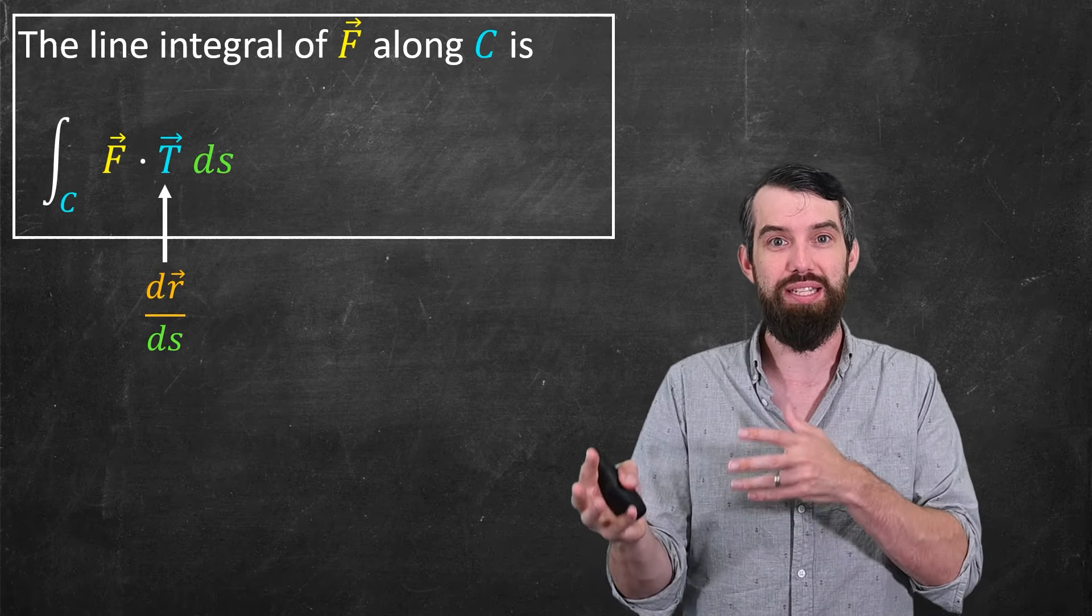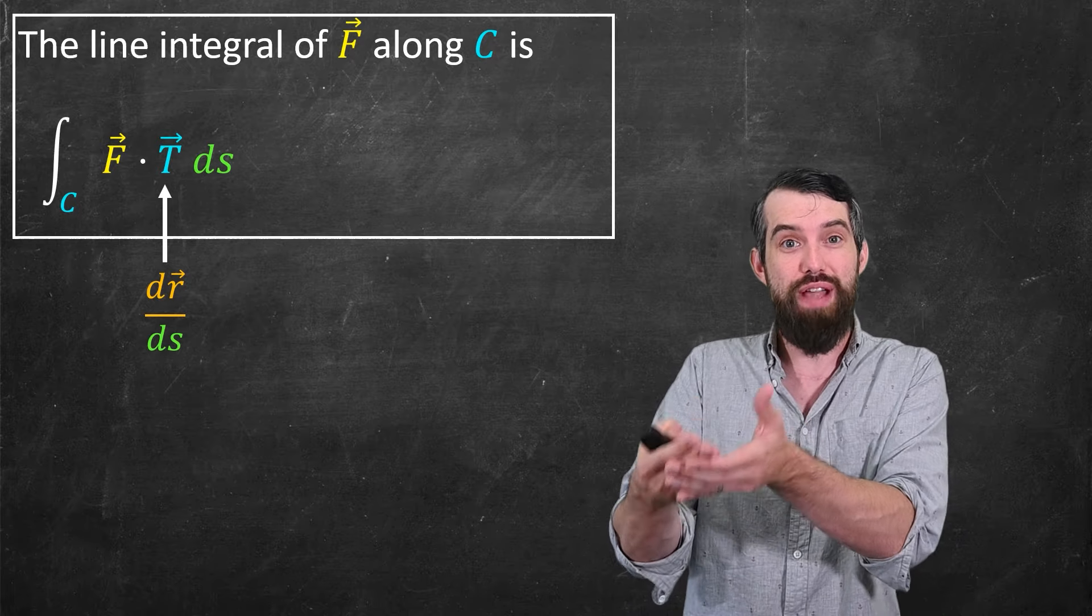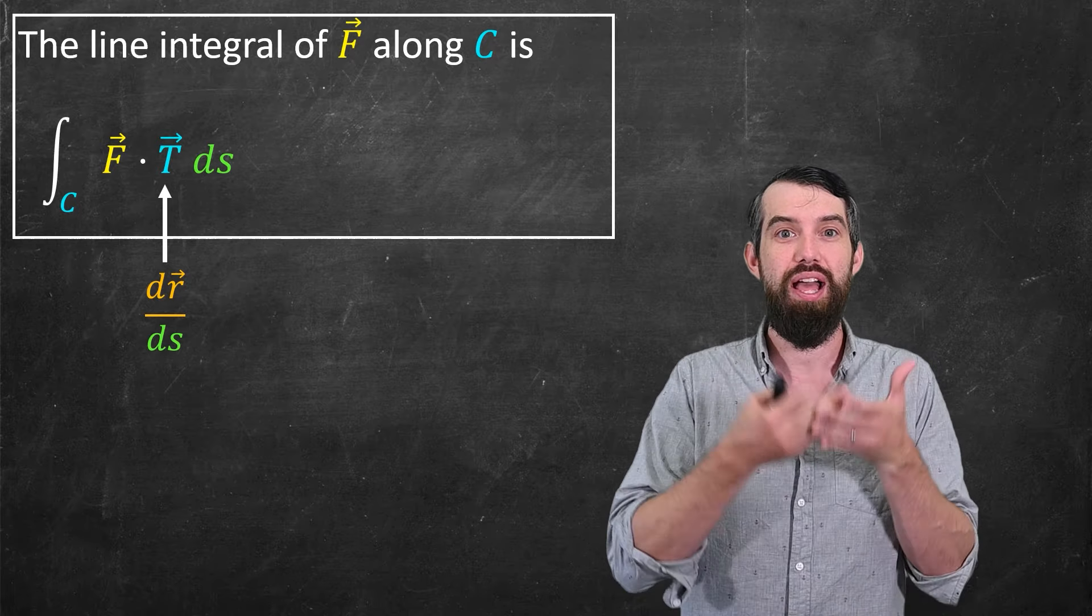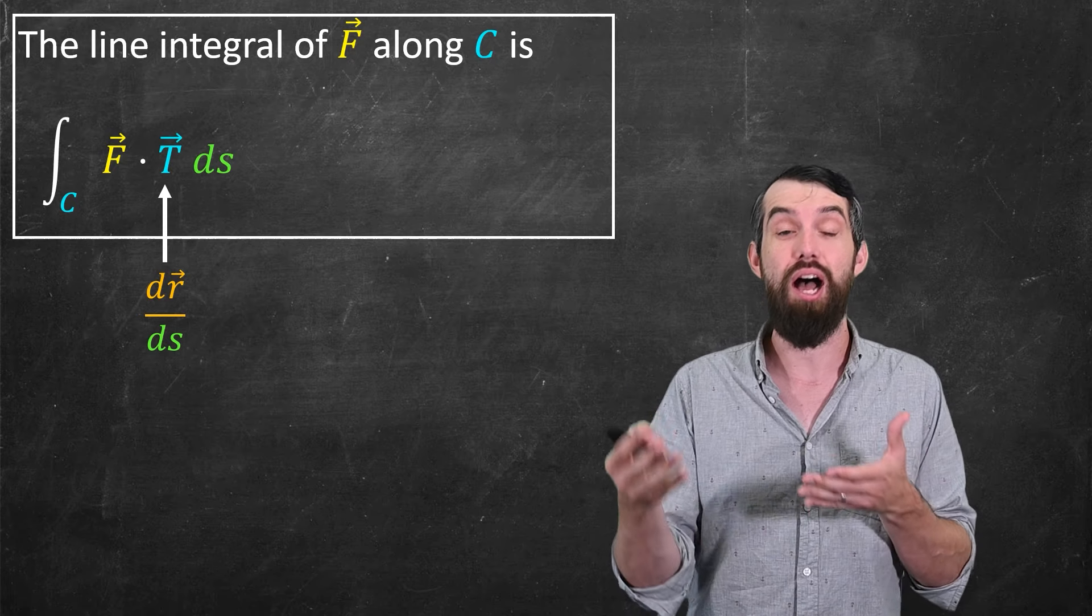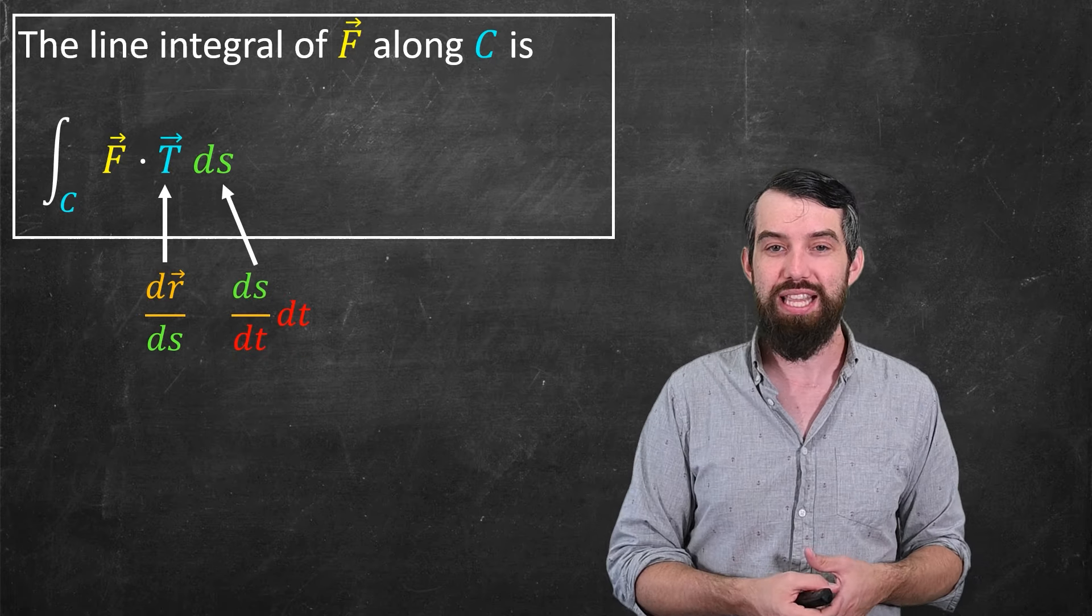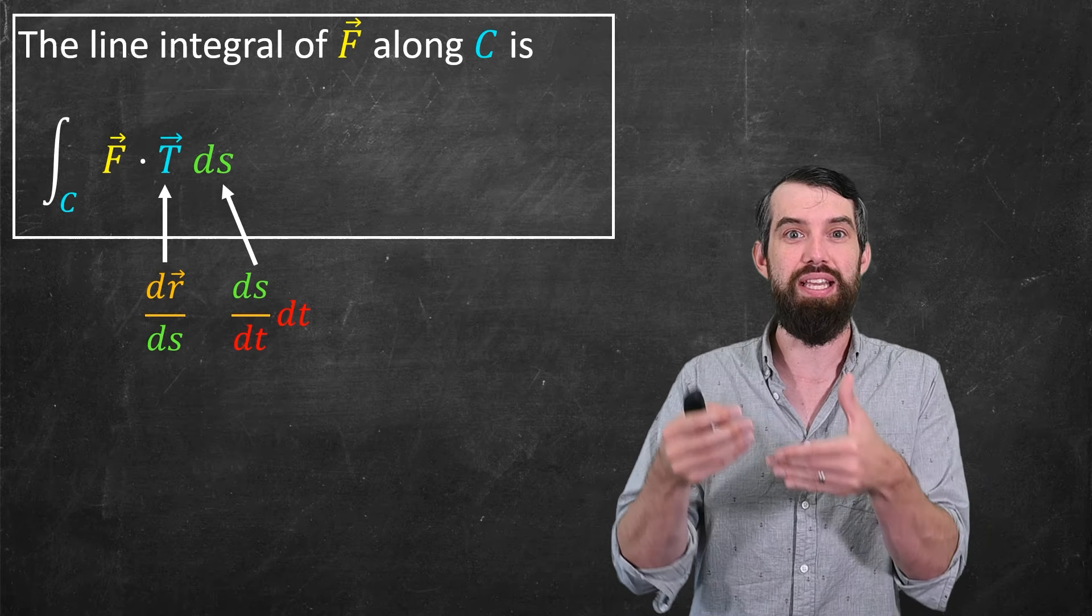Well, a definition of the unit tangent vector t was just that it was the derivative dr/ds. So if you have a specific parameterization, you can say, well, how much does that position vector change as you increase arc length? That was the definition of the unit tangent vector.